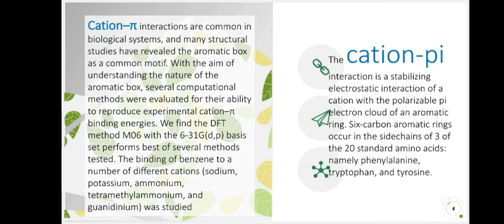The cation-pi interaction is a stabilizing electrostatic interaction of a cation with a polarizable pi electron cloud of an aromatic ring. Six carbon aromatic rings occur in the side chain of three of the 20 standard amino acids namely phenylalanine, tryptophan, and tyrosine.